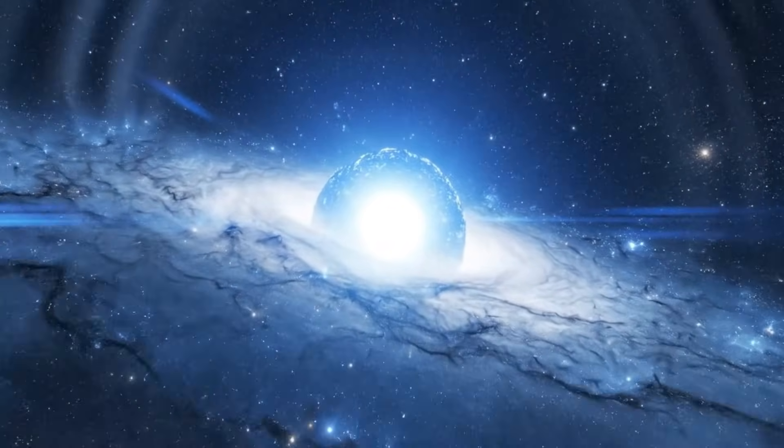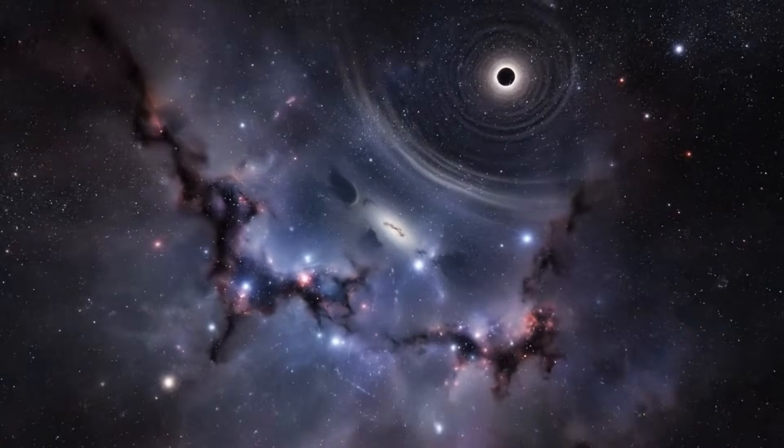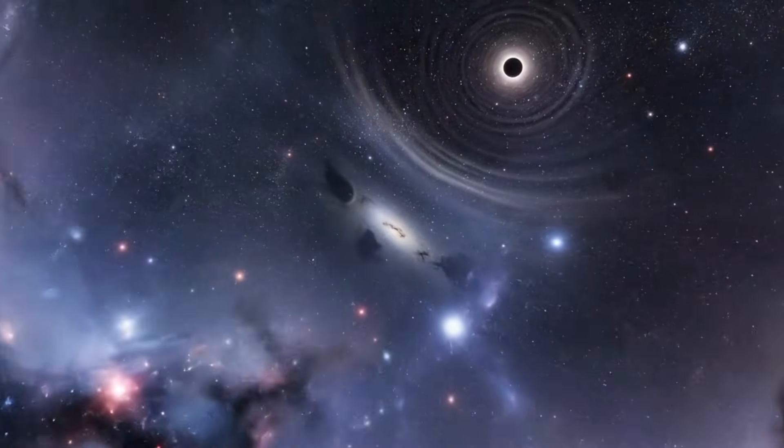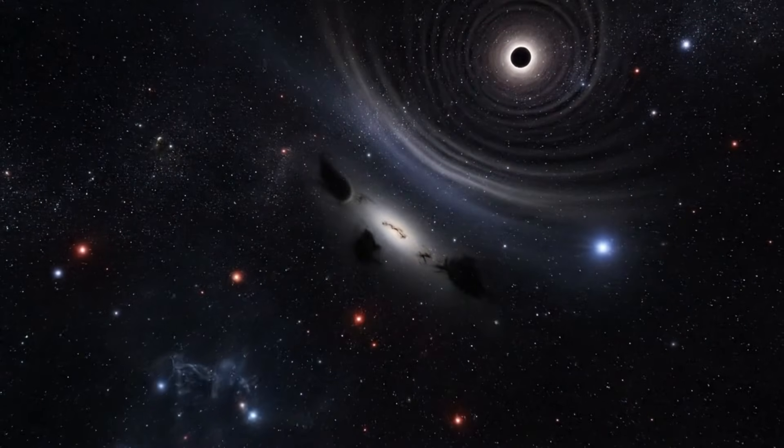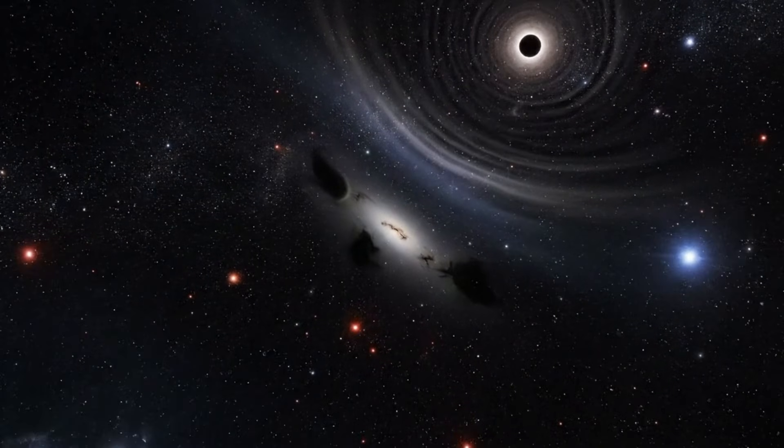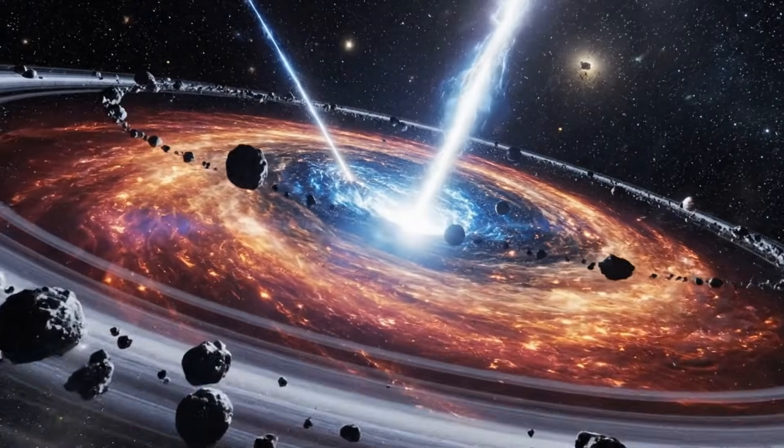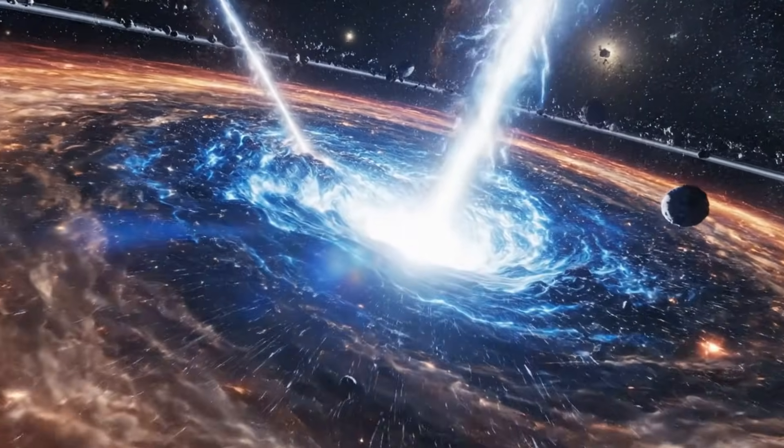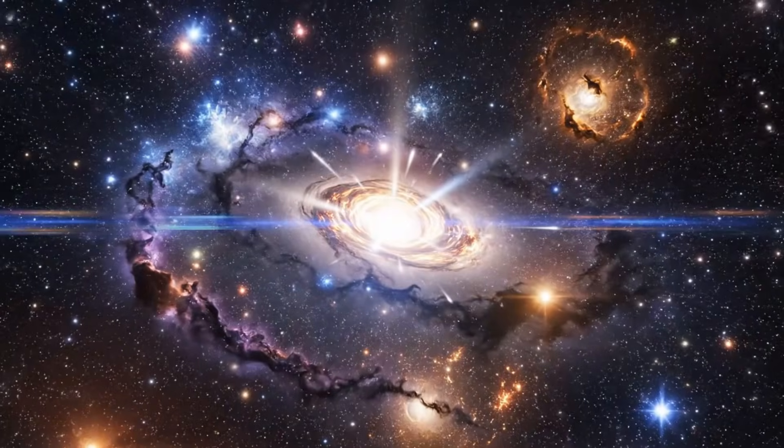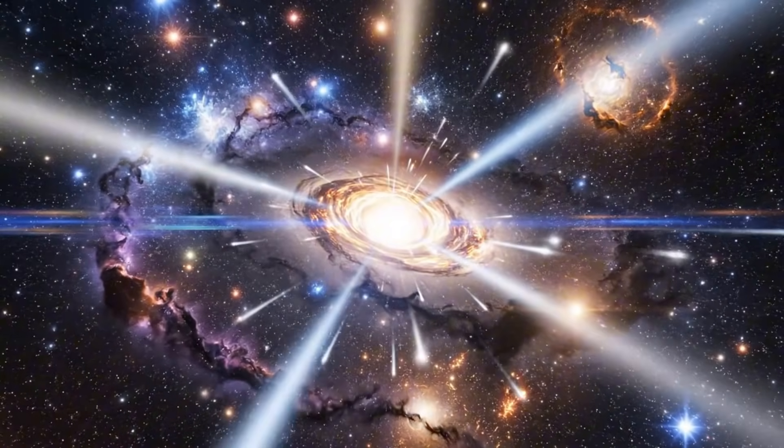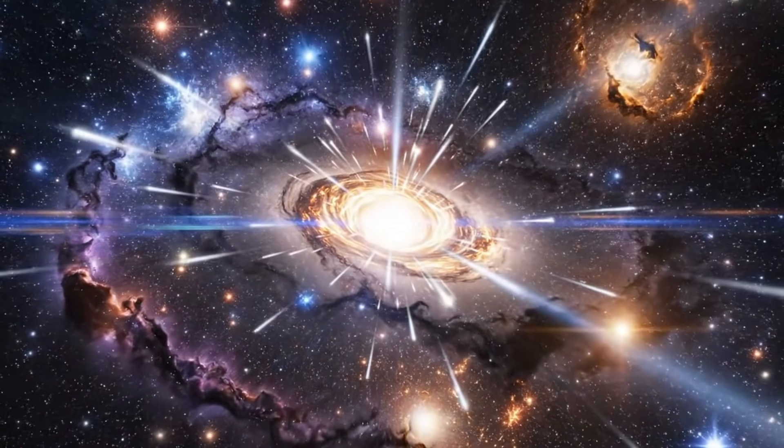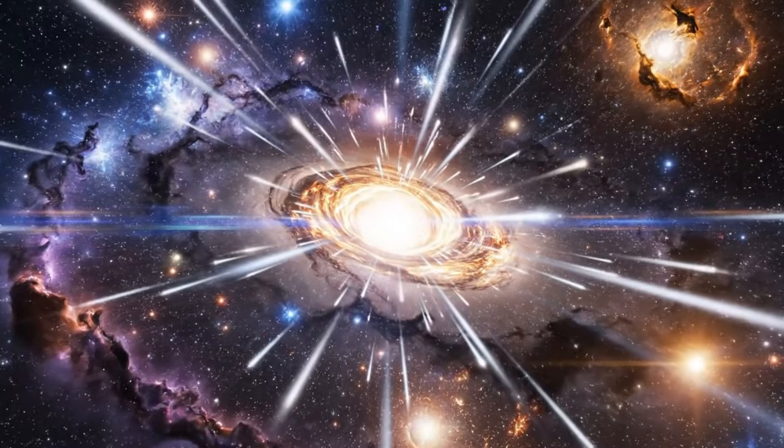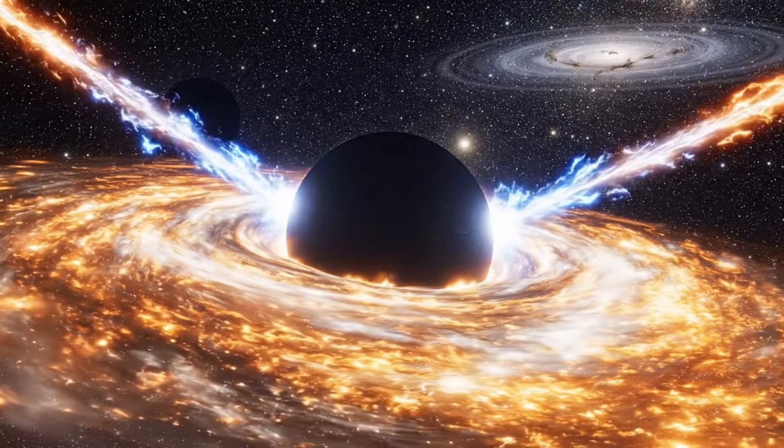A blazing core of a distant galaxy, powered by a supermassive engine that never rests. As the redshift values were calculated, the truth spread through the team studying it. Ton 618 was not just far away. It was impossibly far. So distant that the light reaching us today had been traveling for more than 10 billion years.